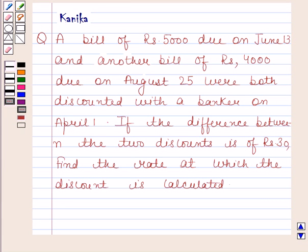Hi and welcome to the session. Let us discuss the following question. The question says a bill of rupees 5000 due on 13 June and another bill of rupees 4000 due on August 25 were both discounted with a banker on April 1. If the difference between the two discounts is 30 rupees, find the rate at which the discount is calculated.